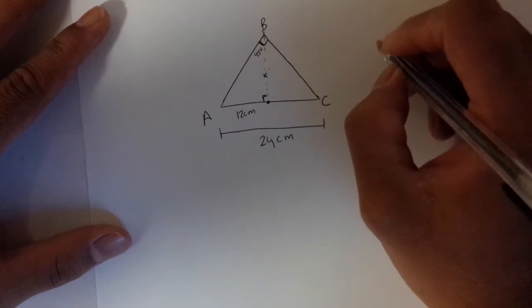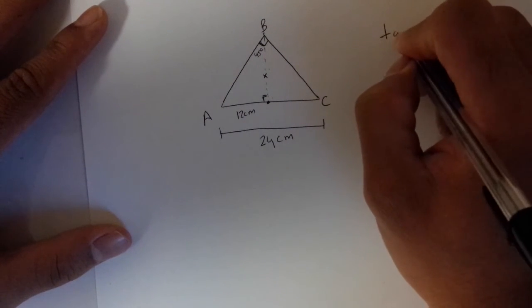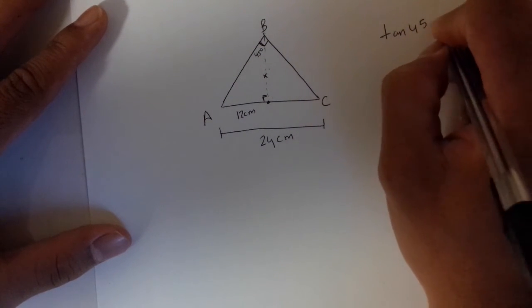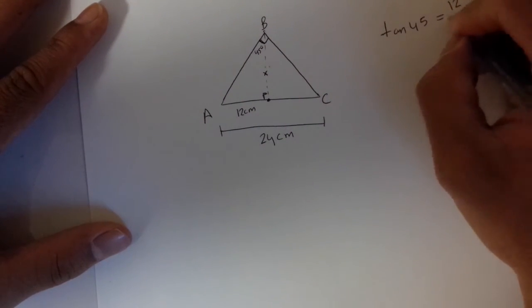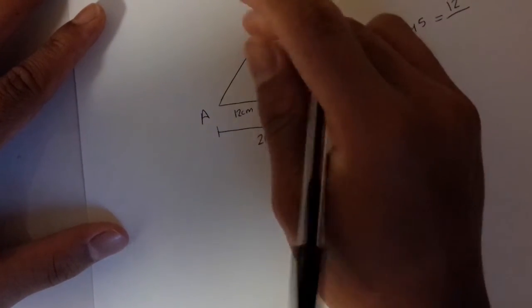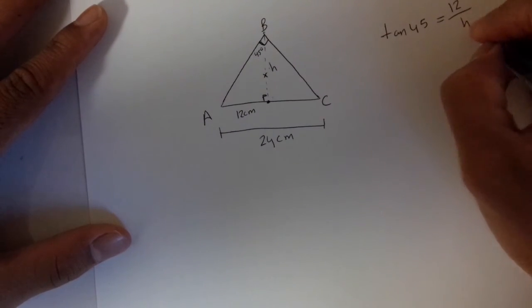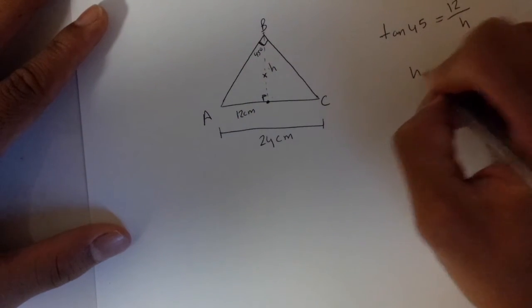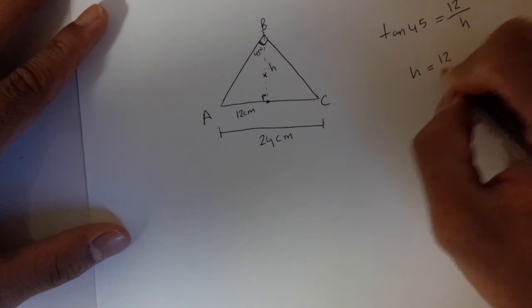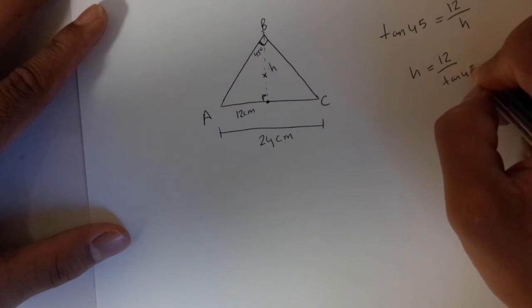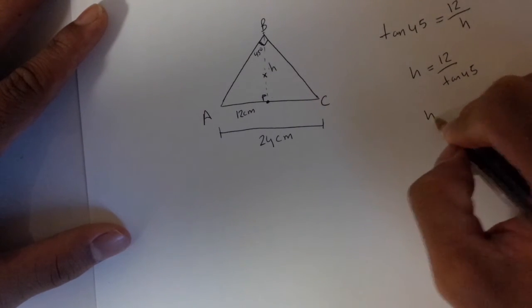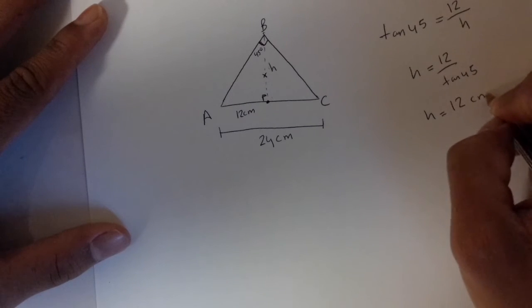I'll be writing that as tan 45 is equal to 12 upon height. H is equal to 12 upon tan 45. Tan 45 is 1, so height is 12 centimeters.